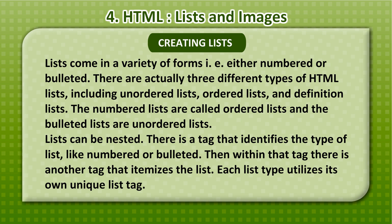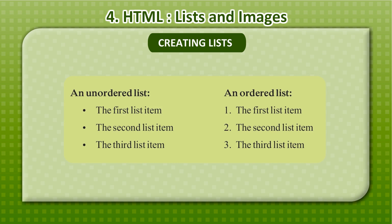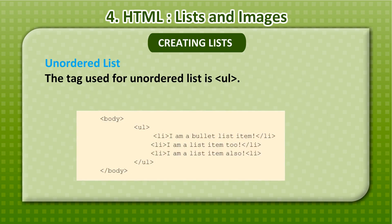Each list type utilizes its own unique list tag. An unordered list produces: the first list item, the second list item, the third list item. An ordered list produces: 1. the first list item, 2. the second list item, 3. the third list item.